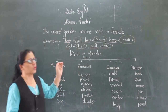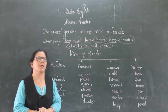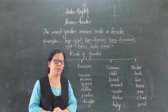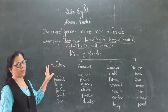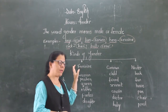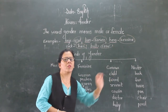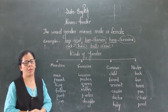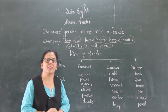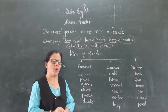So now let us see different kinds of genders. There are four kinds of genders. First is masculine. Second is feminine. Third is common. And fourth is neuter. Now let us understand all these four kinds of genders one by one.